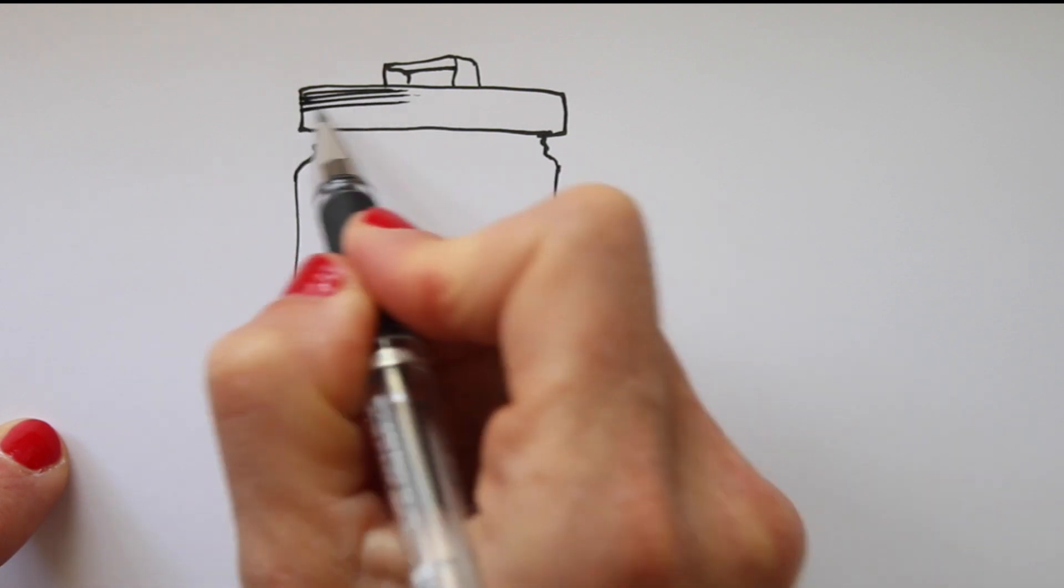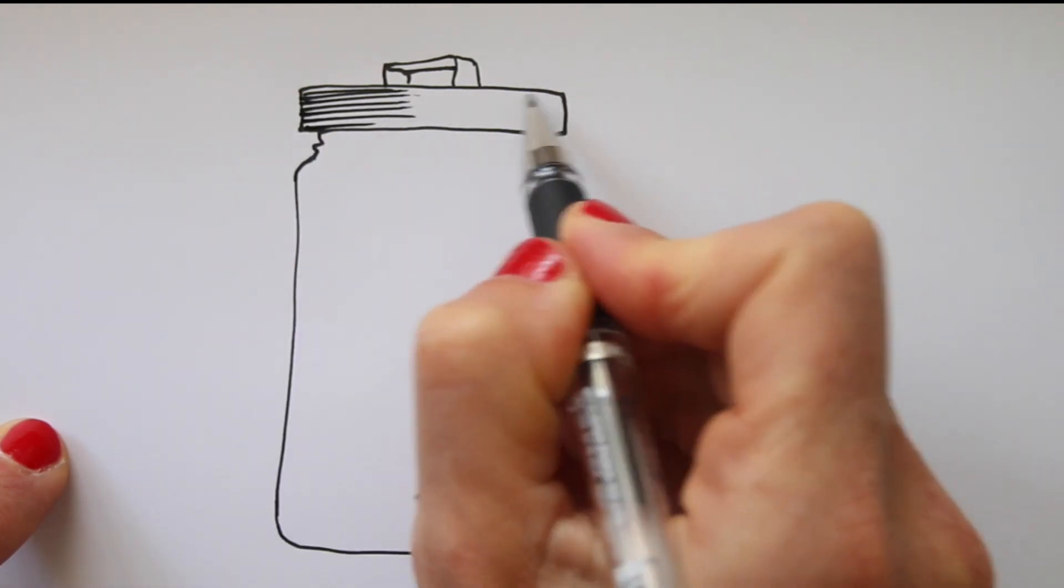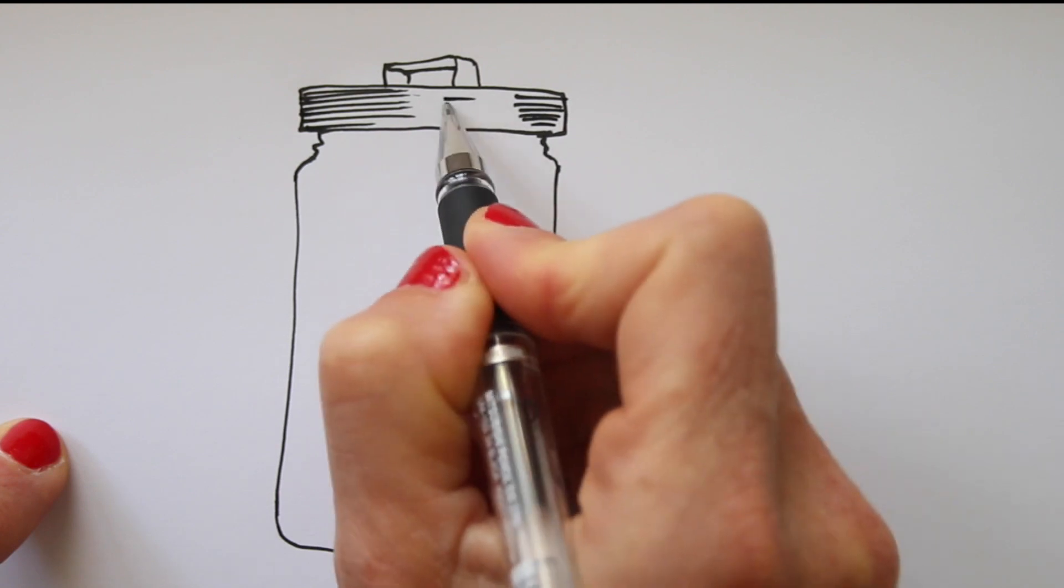On the lid of the jar, I draw lines and make sure to leave white space for the highlighted areas on the lid.